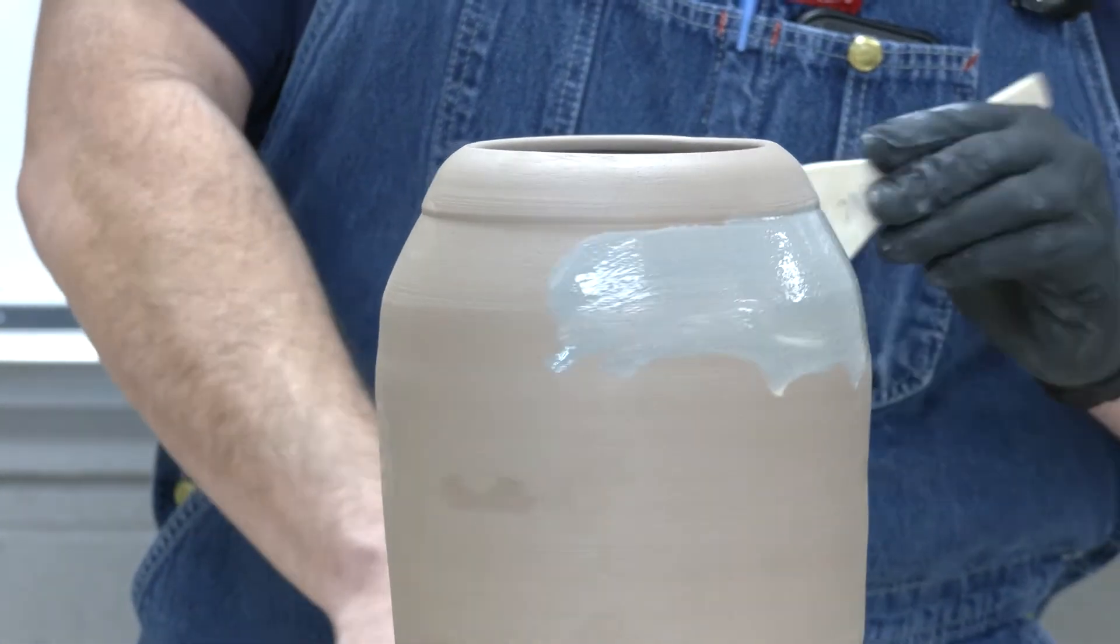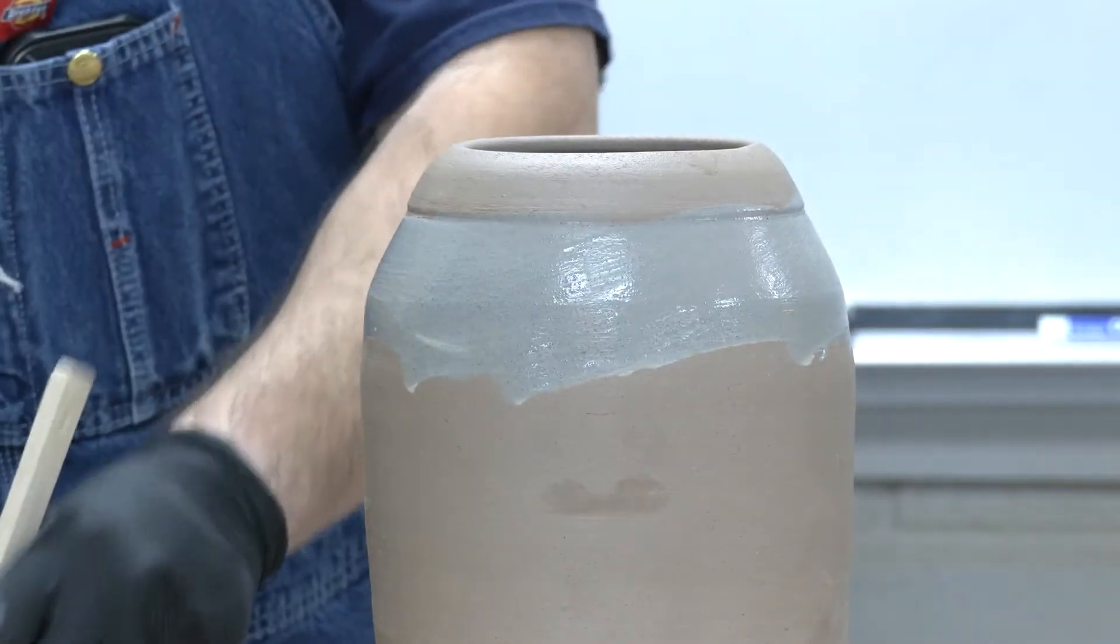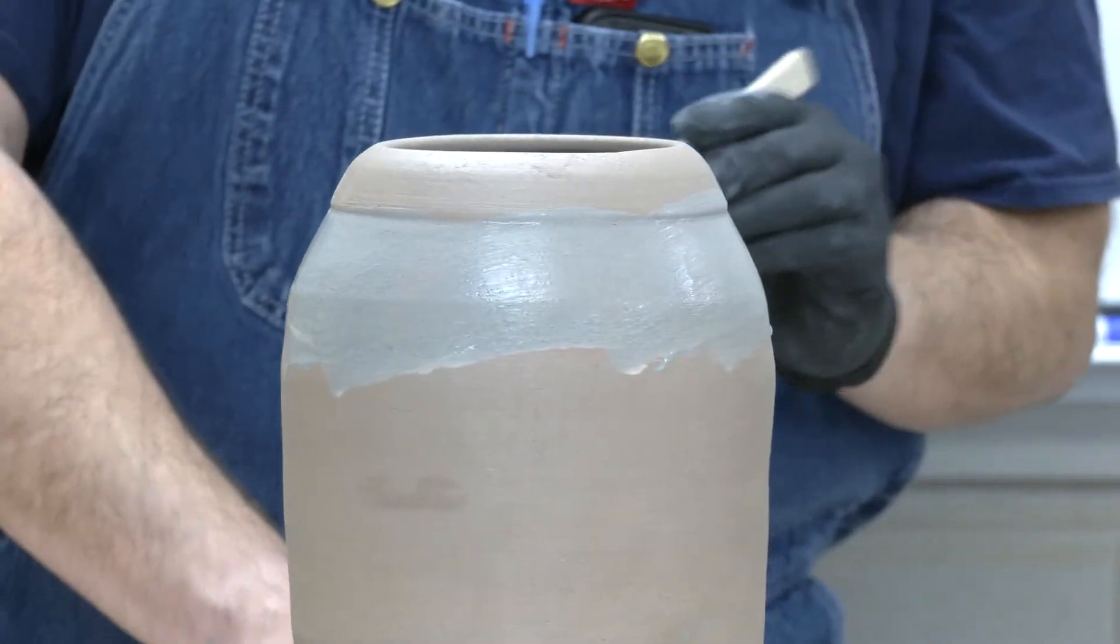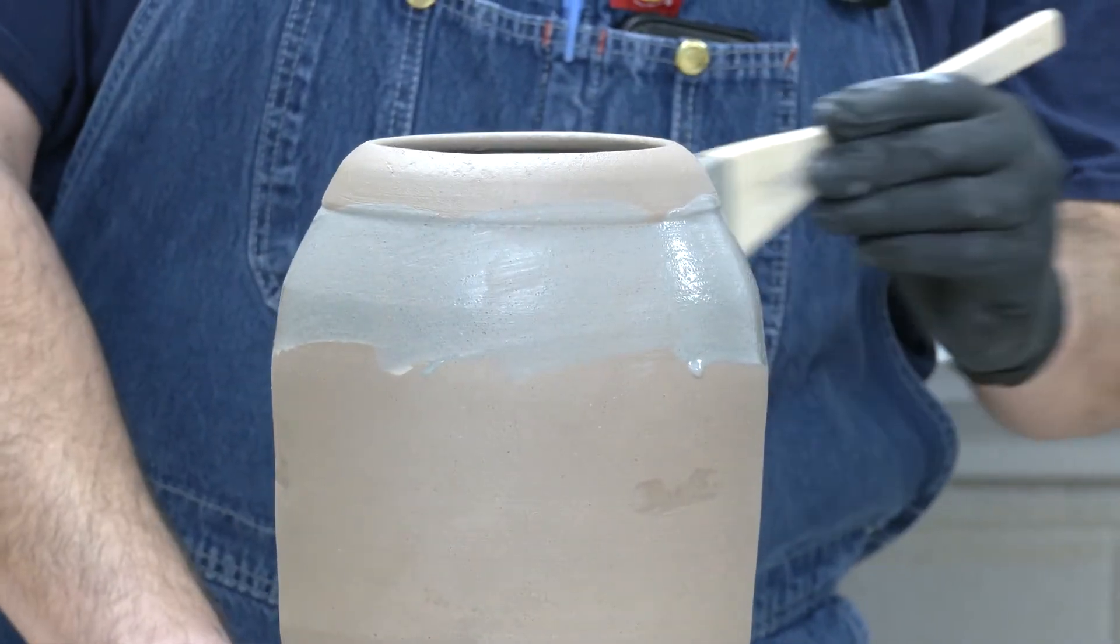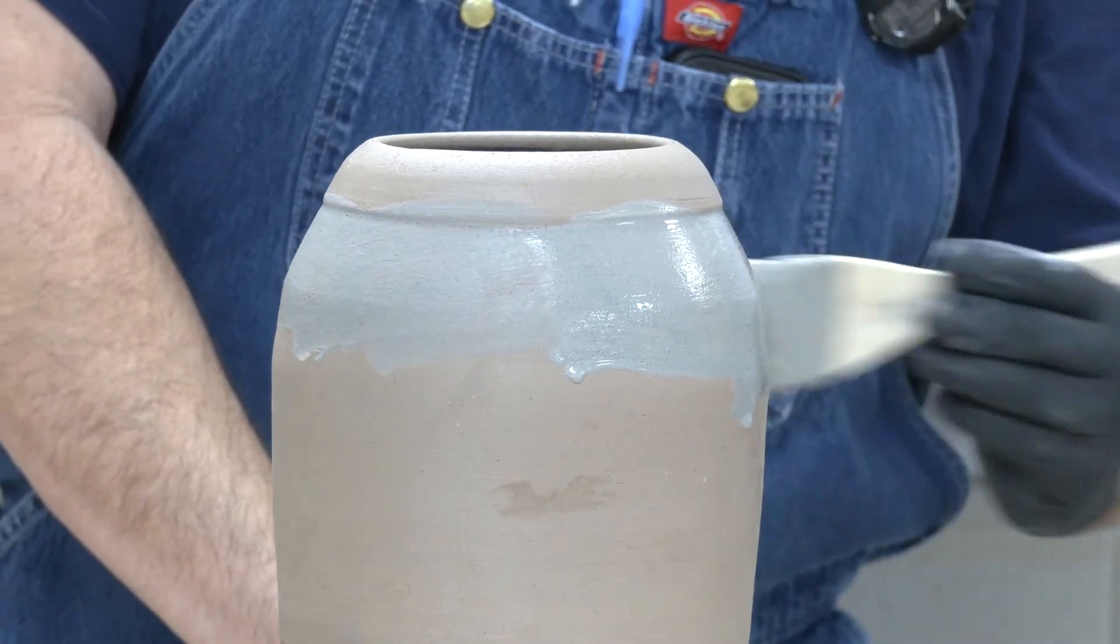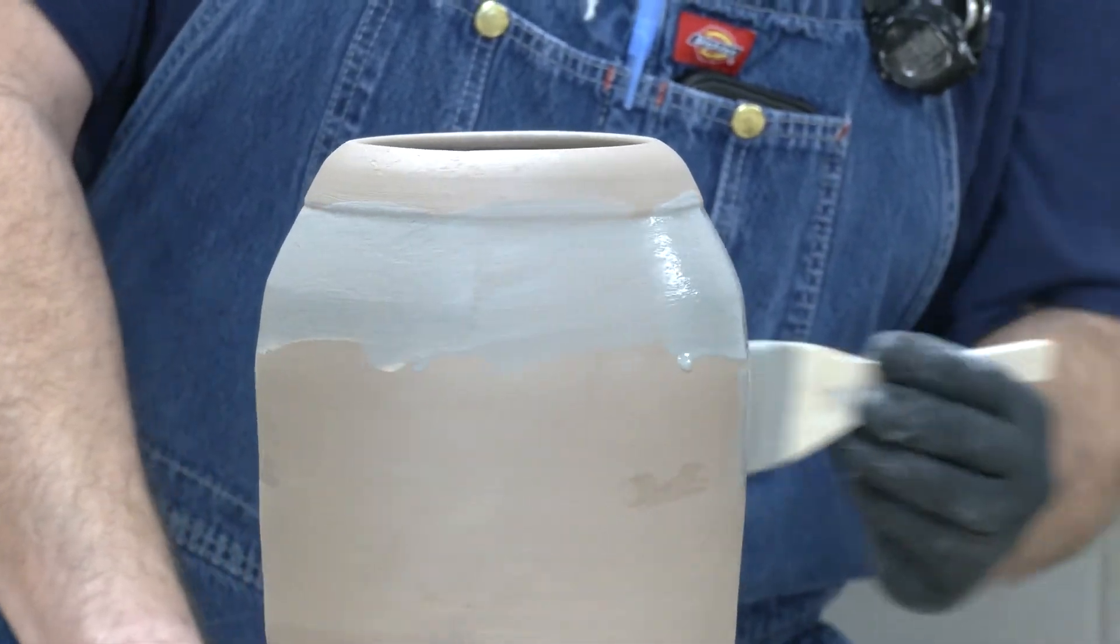Just like a regular slip as I go, and anywhere I paint it, as it fires the silicon carbide is going to do outgassing and it's going to bubble and it's going to become part of the surface.